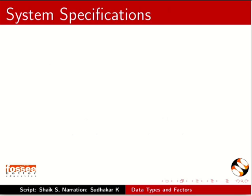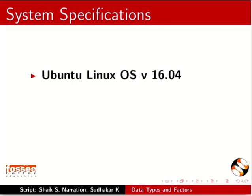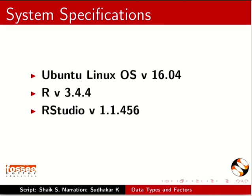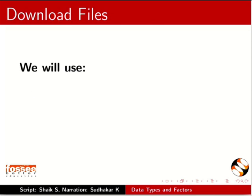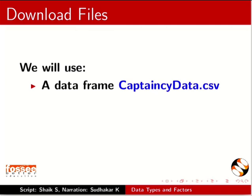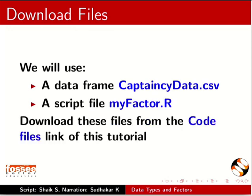This tutorial is recorded on Ubuntu Linux OS version 16.04, R version 3.4.4, and RStudio version 1.1.456. Install R version 3.2.0 or higher. For this tutorial we will use a data frame CaptancyData.csv and a script file MyFactor.R. Please download these files from the code files link of this tutorial.